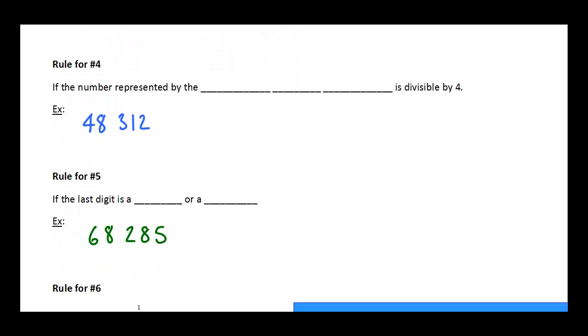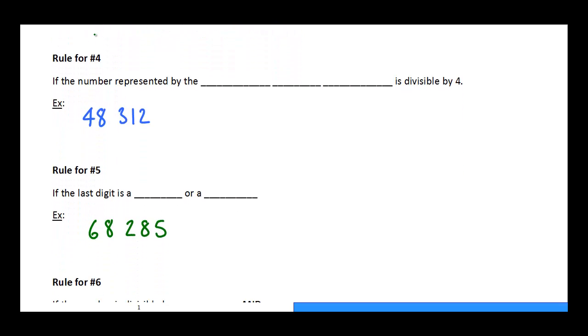Our next rule is the rule for number 4. For the rule for number 4, what we have to do is if the number represented by the last 2 digits is divisible by 4, then the entire number is divisible by 4. So take this number here, 48,312. That's a pretty big number. All I actually have to care about is the last 2 digits. I just zero in on those last 2 digits and ask myself, is 12 divisible by 2?